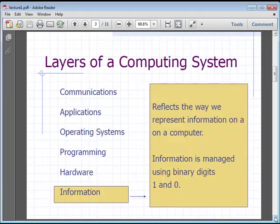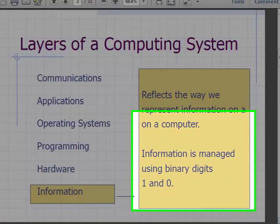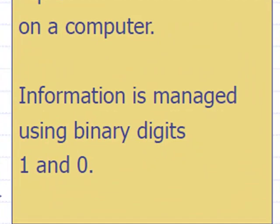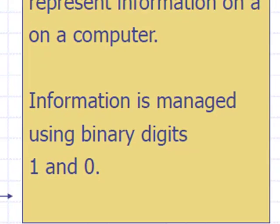The first layer we're going to talk about is the information layer, which reflects the way we represent information on a computer. With computers, all information is represented as binary — it's either a one or a zero.